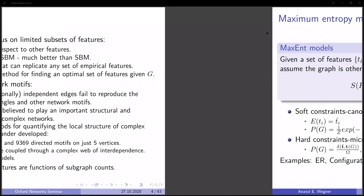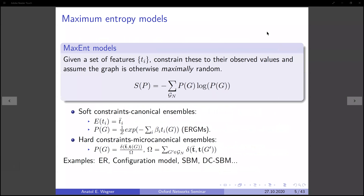Many popular network features can actually be expressed in terms of subgraph counts. So if we could get a handle on subgraphs, we could get closer to the ideal case of modeling networks with realistic structures. One way of constructing such general models is to follow the maximum entropy principle. Given any set of features, the way maximum entropy models are constructed is to constrain these features to their observed values and then assume that the graph is maximally random, measured in terms of the Shannon entropy.